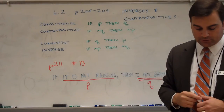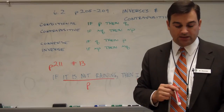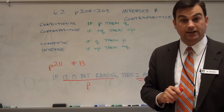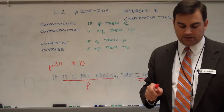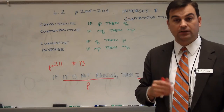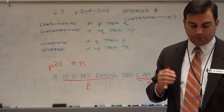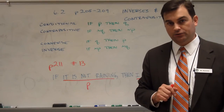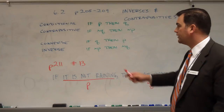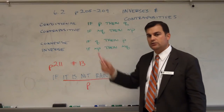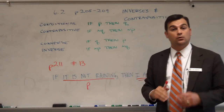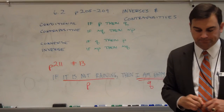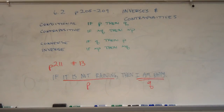So in summary, the answers for problem 13 would be: 13a, my conclusion is that it is raining; for 13b, my conclusion is that I am happy; for 13c and 13d, there is no conclusion that I can draw, because these are the converse and inverse of the original conditional, which are not logically equivalent to the original conditional.